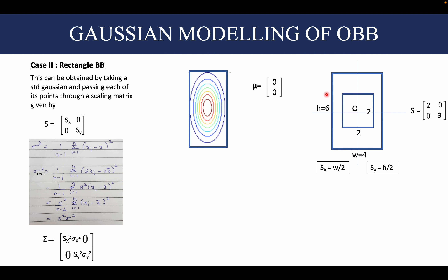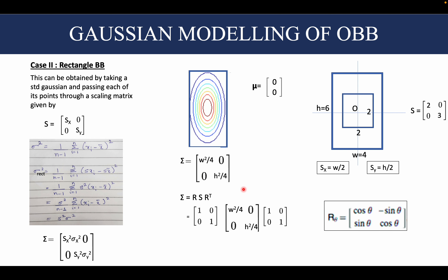Writing the scaling factors sx and sy in terms of the width and height of the new rectangular bounding box: sx = w/2 (so 4/2 = 2) and sy = h/2 (so 6/2 = 3). Plugging sx and sy into the covariance matrix equation and keeping σx and σy as 1 for the standard 2D Gaussian, we get the covariance matrix equation. Breaking it down into R S R-transpose, since there is no rotation the rotation matrix here is the identity matrix.